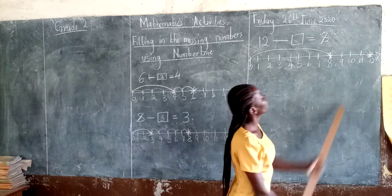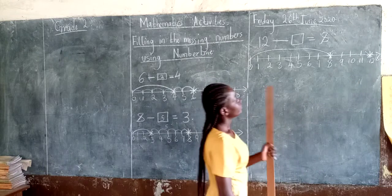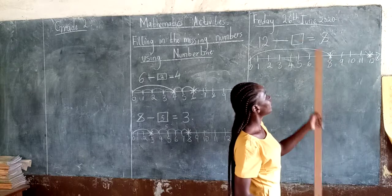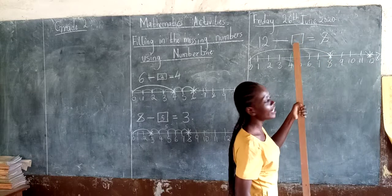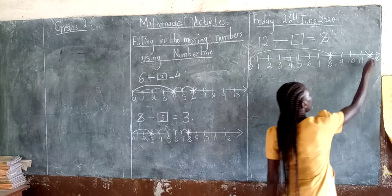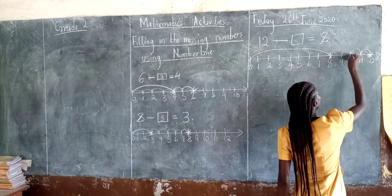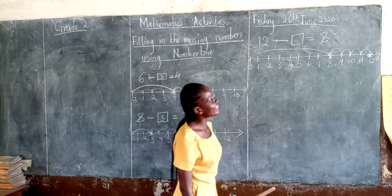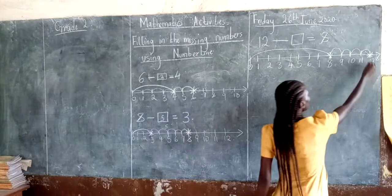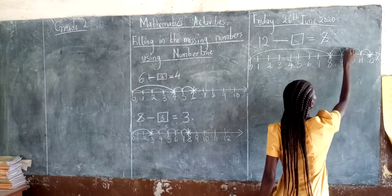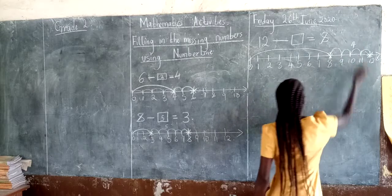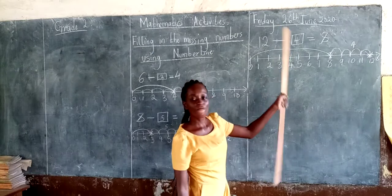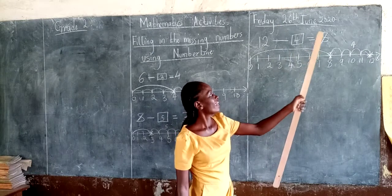We count backward from 12 to 8: one, two, three, four. We've skipped four steps. So our answer is 4. Twelve take away 4, we get 8.